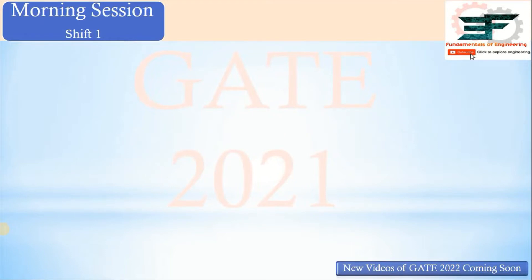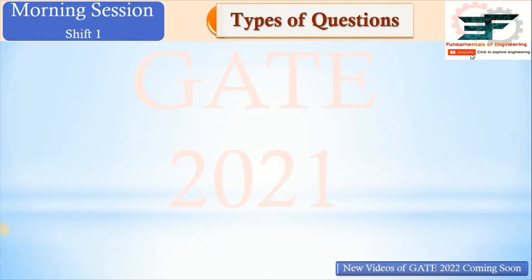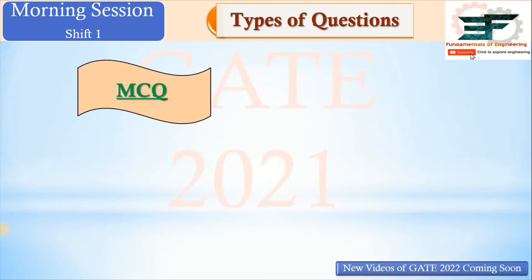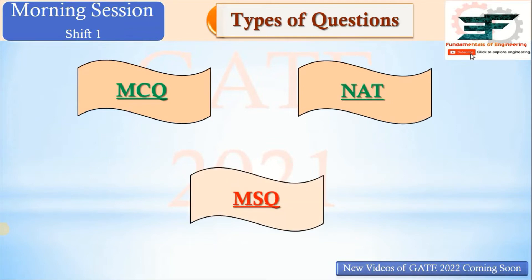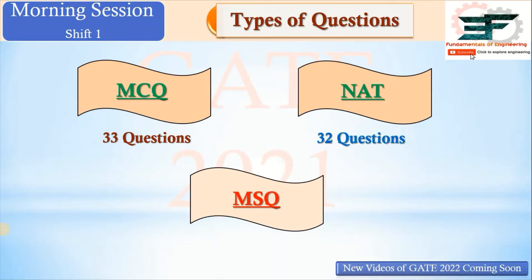Now we are going to analyze the GATE 2021 Mechanical Engineering paper, starting with the morning session. This year, GATE 2021 was organized by IIT Bombay. There were three types of questions: MCQ, NAT type, and MSQ. All 65 questions were distributed among these types — 33 questions were MCQ, 32 were NAT, and zero questions were MSQ, even though MSQ (where you select more than one correct option) was announced.